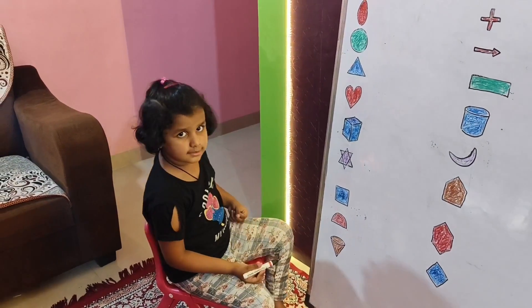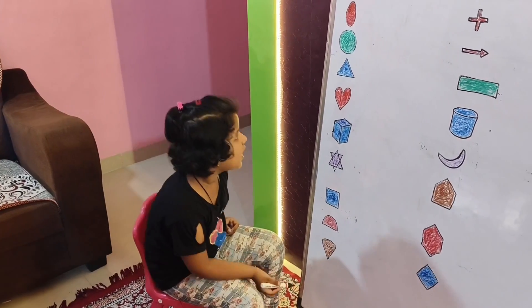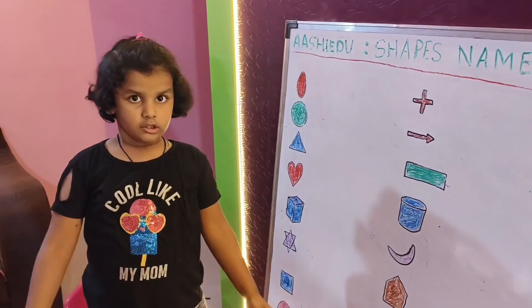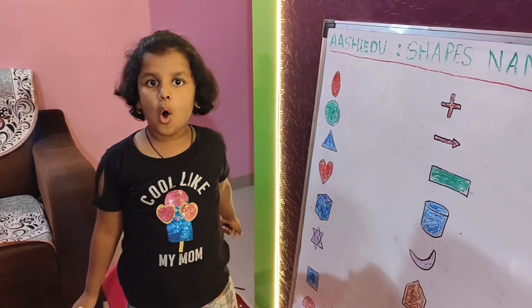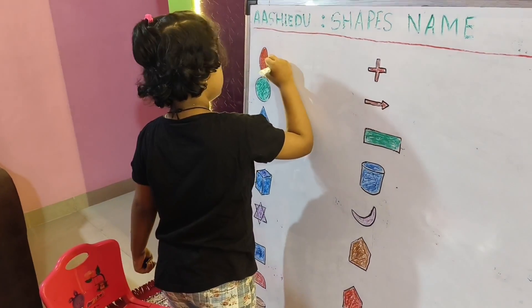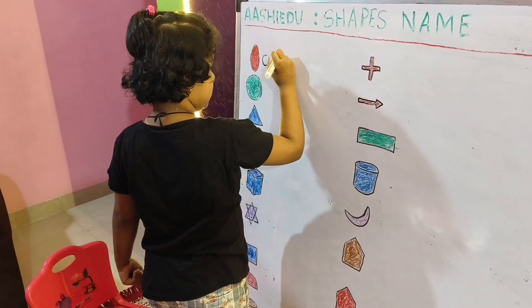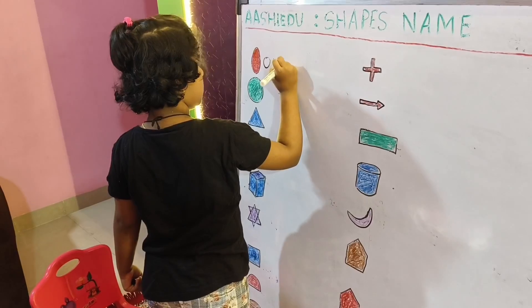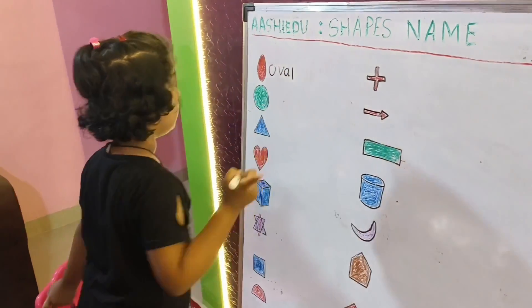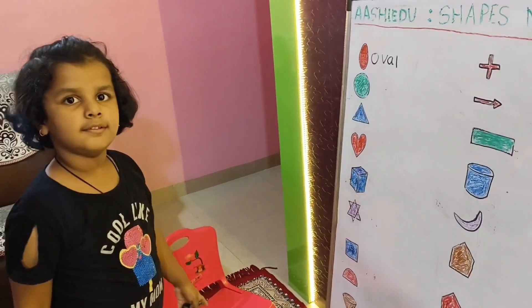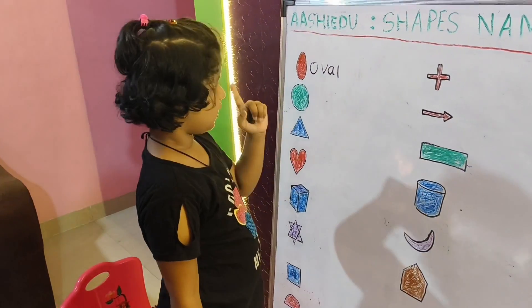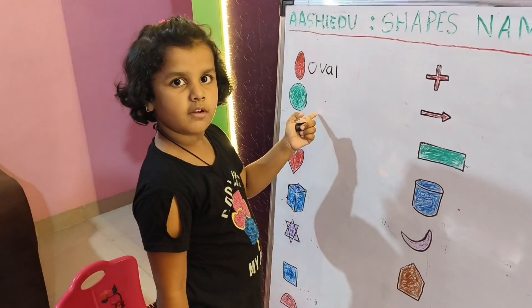First, we need to light the oval. O-V-A-L, Oval. Very good Aasya! And this is number 1.